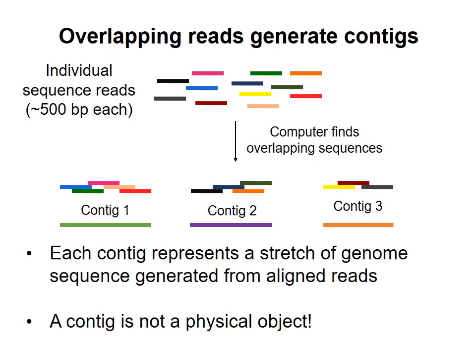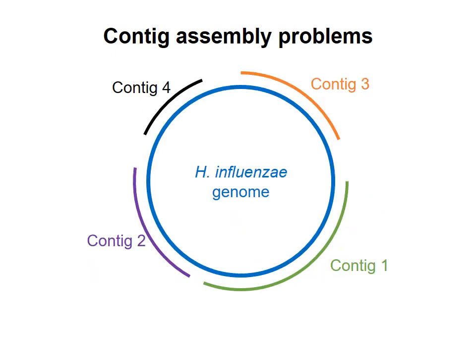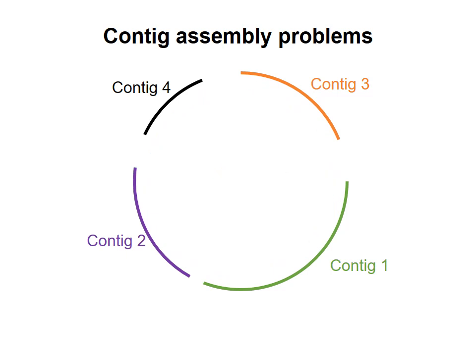The researchers now had two problems. First, they had no sequence information for the regions of the genome in between the contigs. And second, they did not know what order the contigs should be arranged in. I've tried to illustrate the problem on this slide, using four contigs instead of 140 for simplicity. If you already know the sequence of the genome, you'd be able to match up each contig to the appropriate place on the genome. But if the genome has never been sequenced before, you don't know where each contig should go.